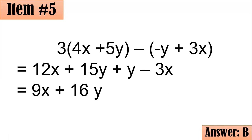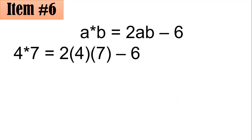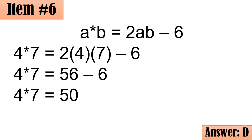Moving on to item number 6. If A asterisk B equals 2AB minus 6, what is the value of 4 asterisk 7? Following the pattern, replace A with 4 and B with 7: 4 asterisk 7 equals 2 times 4 times 7 minus 6. Simplifying: 2 times 4 is 8, and 8 times 7 is 56. Then 56 minus 6 is 50, which is letter D.